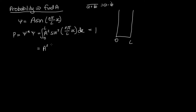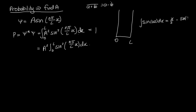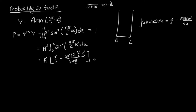To do the integral, we pull A² out front: A² ∫₀ᴸ sin²(nπ/L · x) dx. Using the standard integral of sin²(ax) dx = x/2 − sin(2ax)/(4a), with a = nπ/L, this becomes A² · [x/2 − sin(2nπ/L · x) / (4nπ/L)] evaluated from 0 to L.